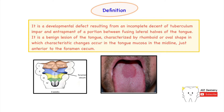The definition of this lesion also explains its pathogenesis. It is a form of developmental defect wherein there is an incomplete descent of the tubercular impar, and there is an entrapment of a portion between the two fusing lateral halves of the tongue. The tongue develops due to the fusion of two lateral lingual swellings, and the tubercular impar plays a significant role in its development. In some individuals, the tubercular impar does not descend completely, leaving behind a small area devoid of its descent. This results in a benign lesion of the tongue with no malignant potential.